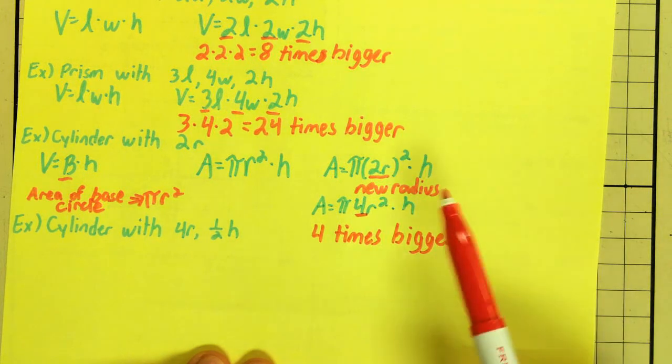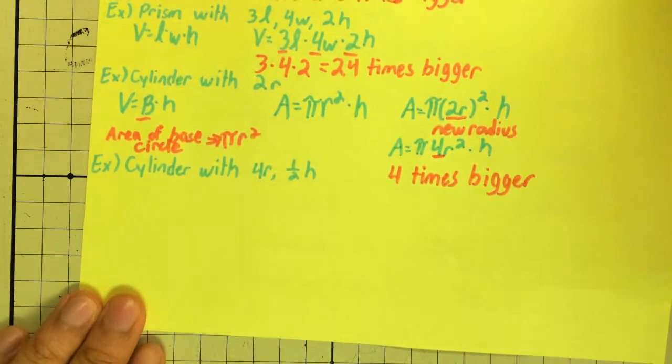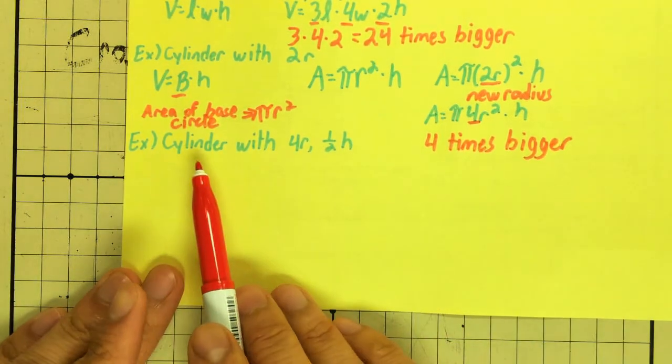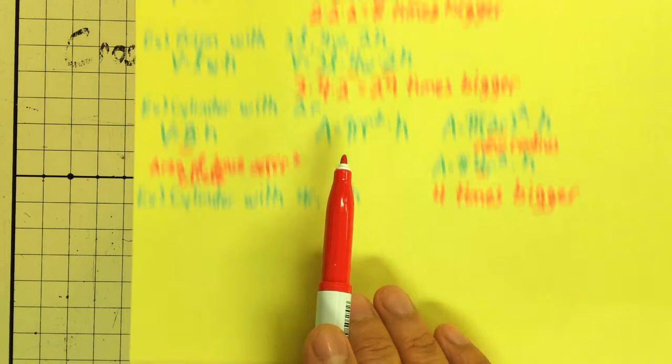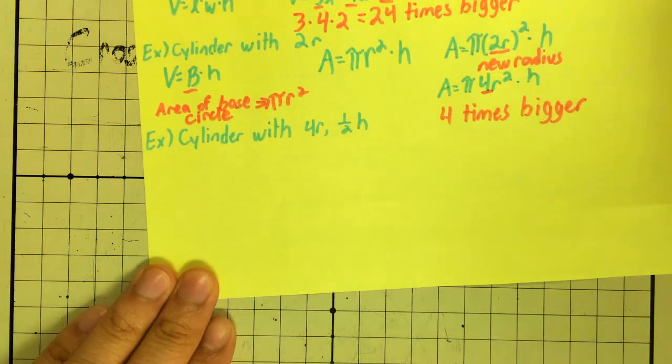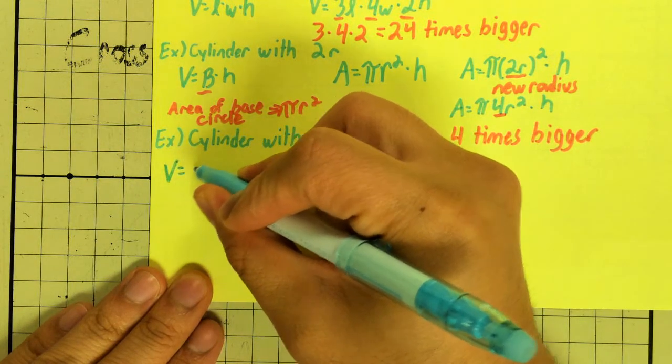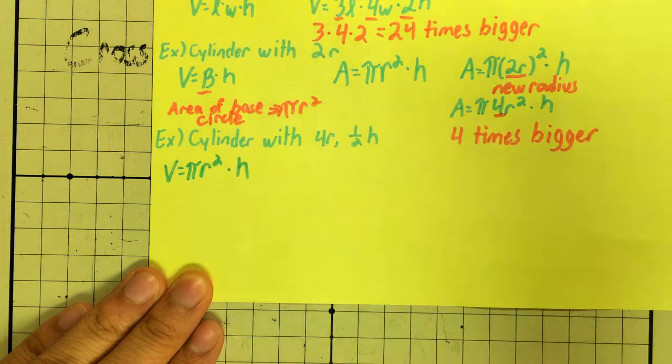Now, that's just for changing my radius. In my last example, I want a cylinder still with 4 times the radius and half your height. So, formula for a cylinder, again, it's still volume equals pi r squared, which is area of the base, times your height.